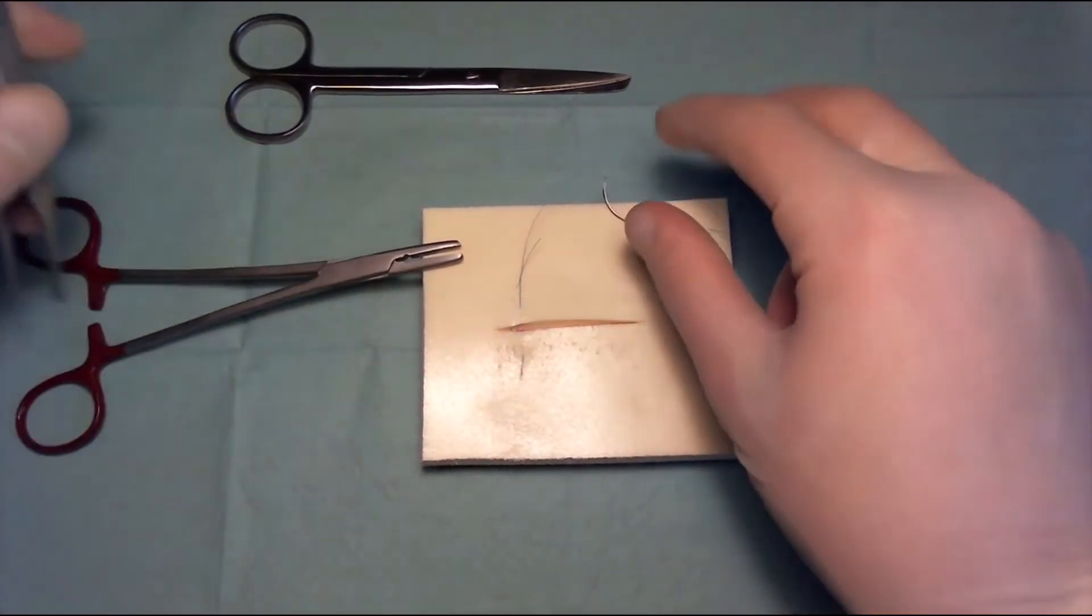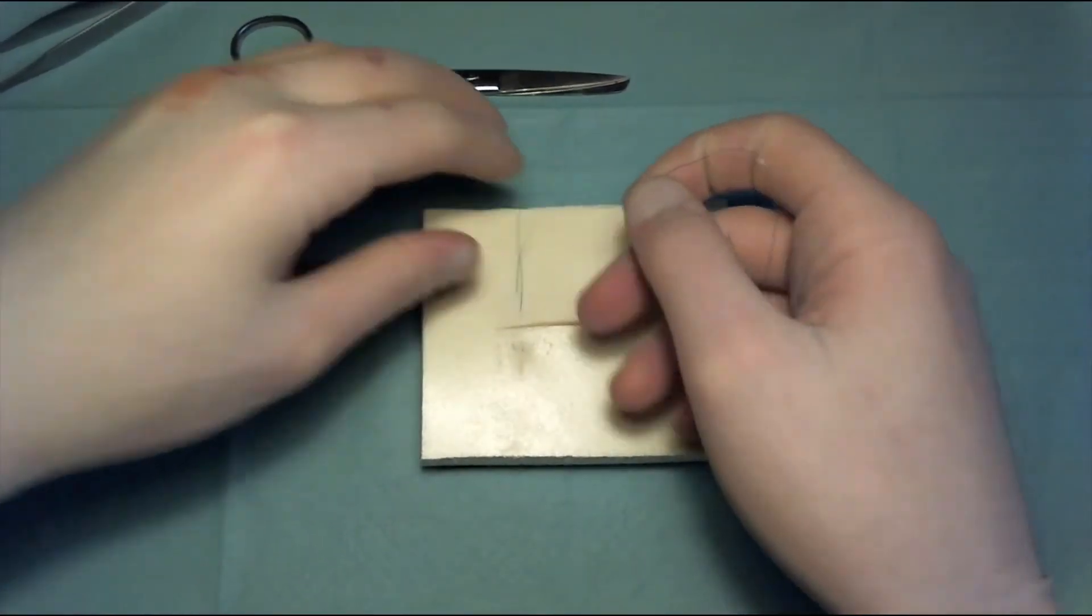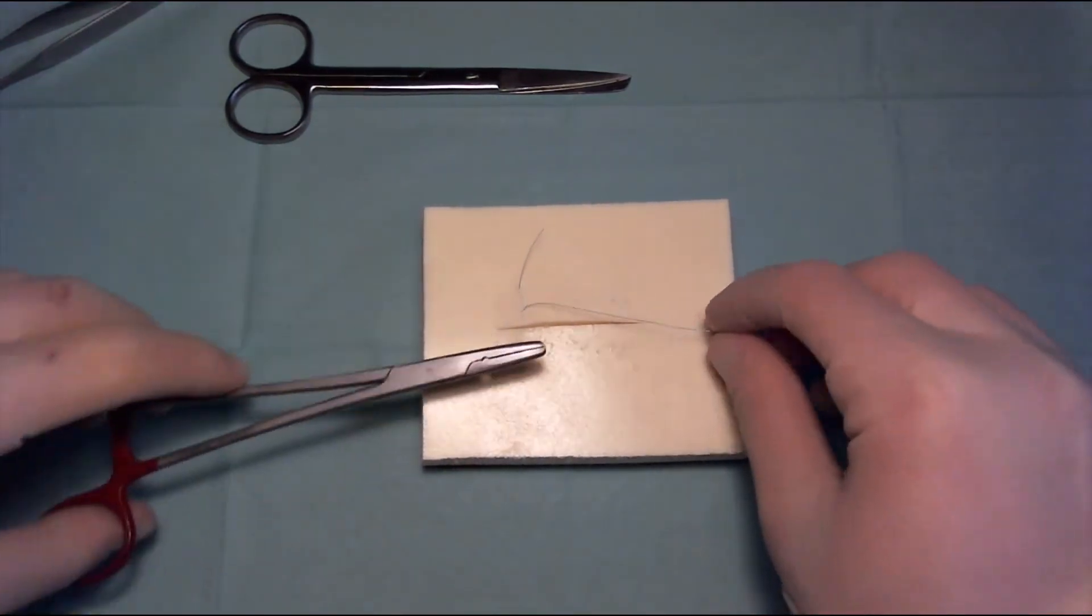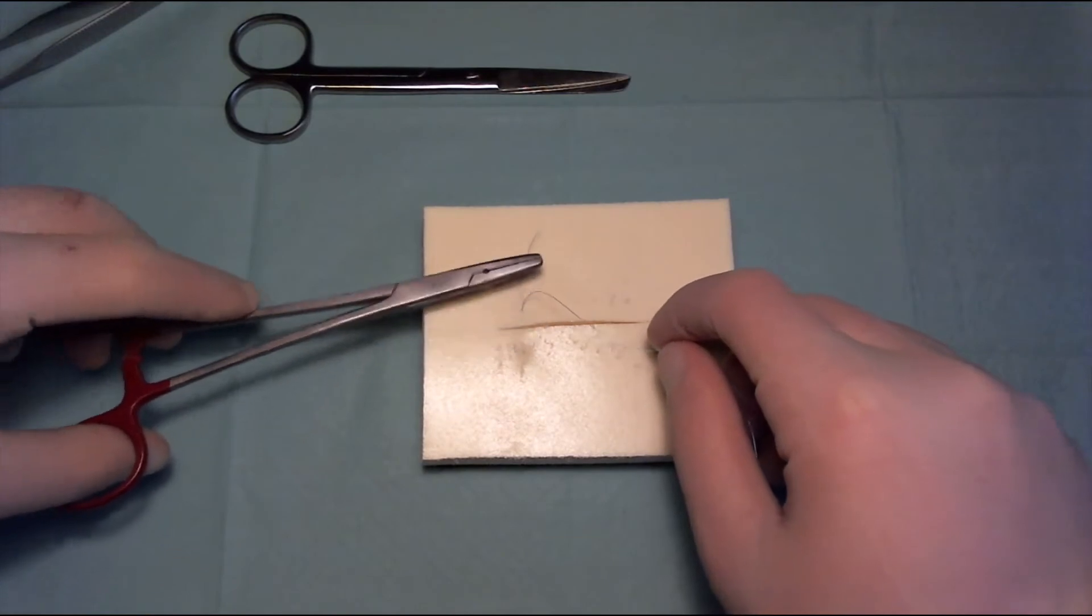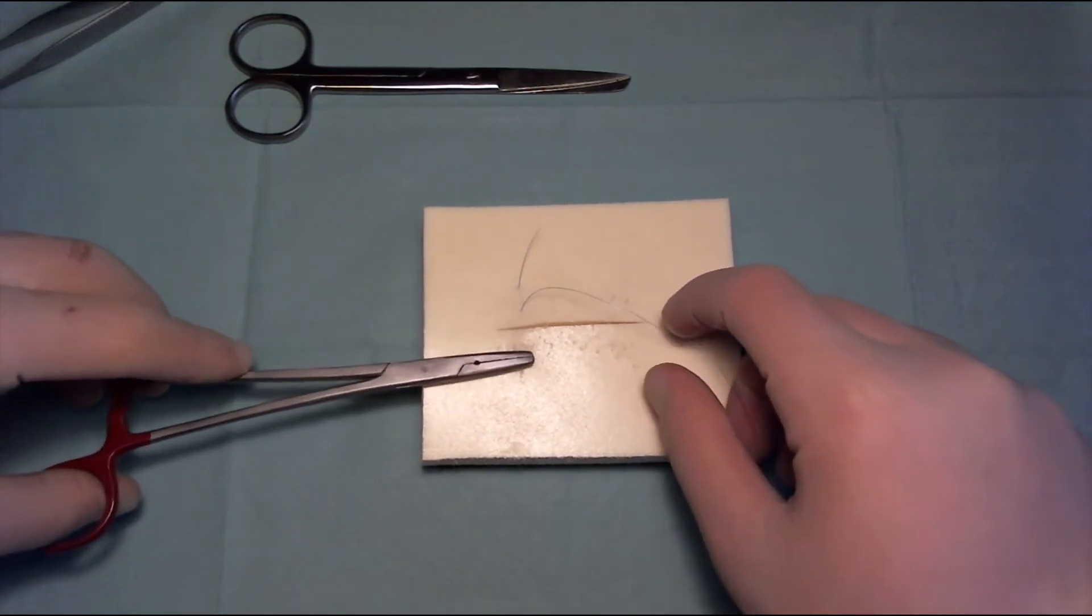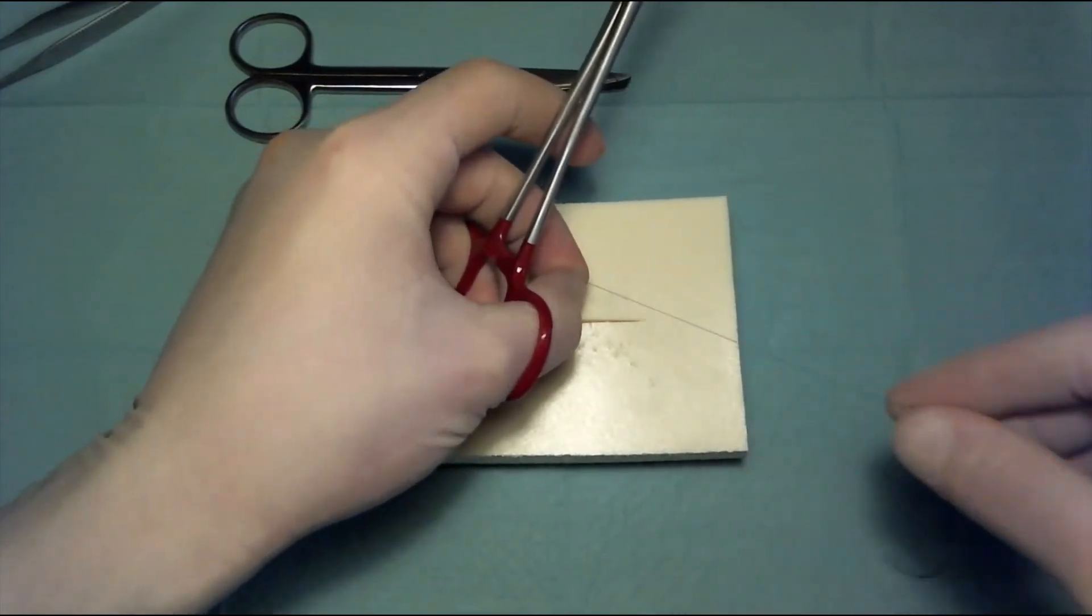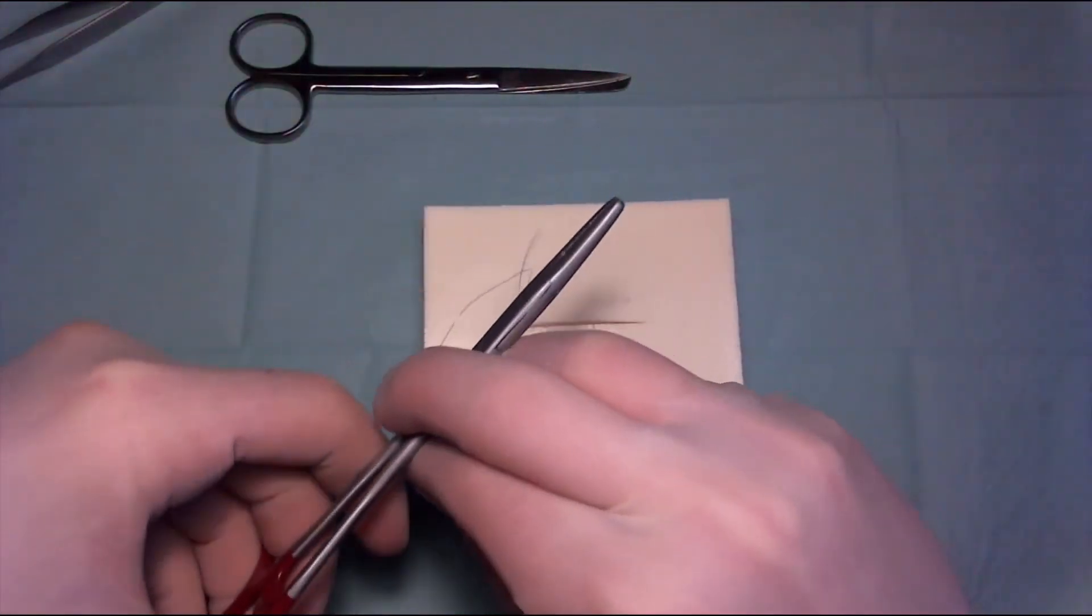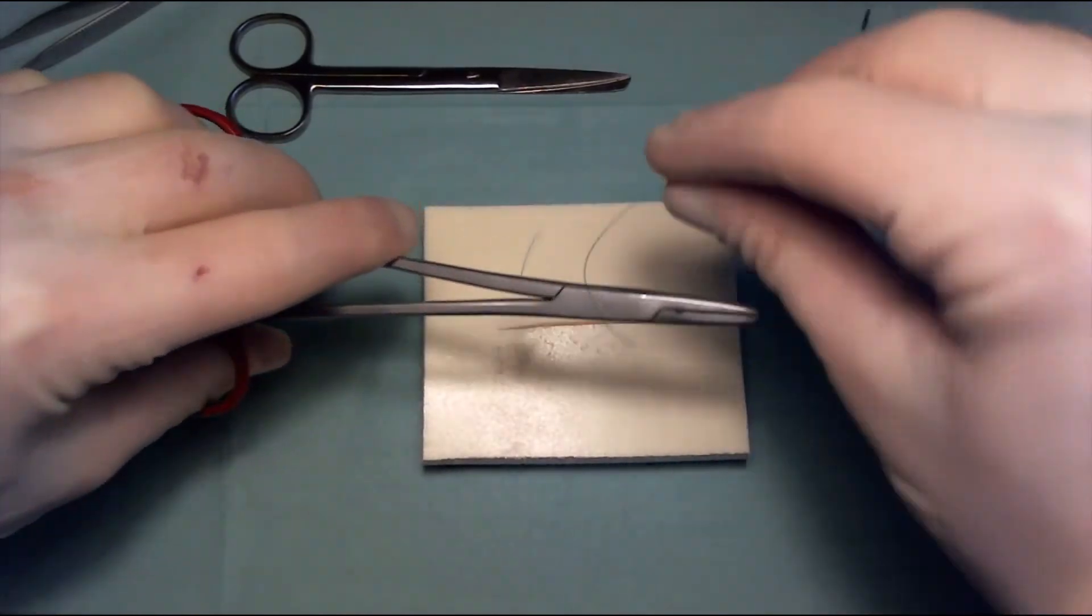Now we can do our knot. Instead of knotting over the wound, we're now going to knot at the medial side of the wound, so next to the wound. It's the same principle as with the simple interrupted. We're going to go away from us one, two...